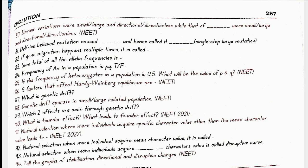What is genetic drift? Variation in the relative frequency of different genotypes in a small population owing to the chance disappearance of particular genes as individuals die or do not reproduce. Genetic drift operates in a small isolated population. Which two effects are seen through genetic drift? Bottleneck effect and founder effect. Founder effect is the loss of genetic variation that occurs when a new population is established by a very small number of individuals from a large population. Genetic drift leads to founder effect.